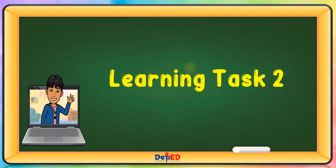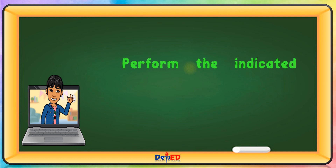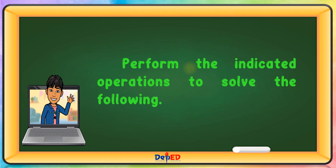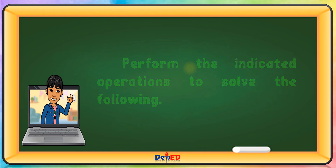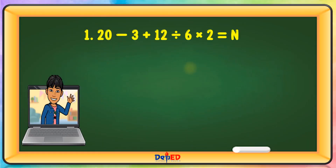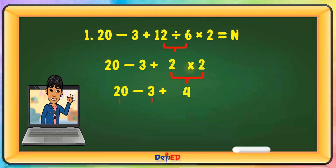Learning Task 2: Perform the indicated operations to solve the following. Problem: 20 − 3 + 12 ÷ 6 × 2 = N. Let us first solve: 12 ÷ 6 = 2. Then 2 × 2 = 4. Then 20 − 3 + 4: 20 − 3 = 17, and 17 + 4 = 21. N is equal to 21.